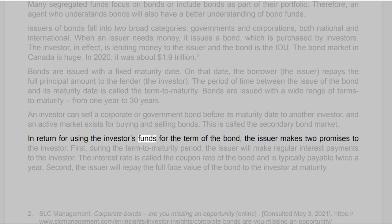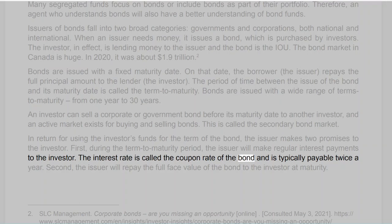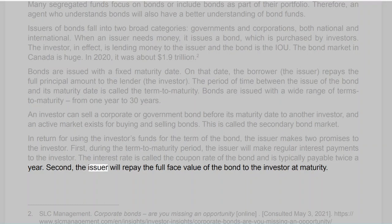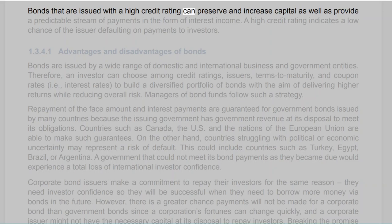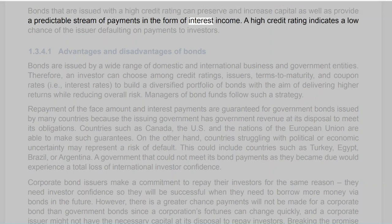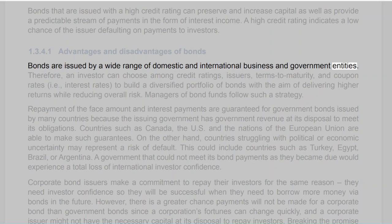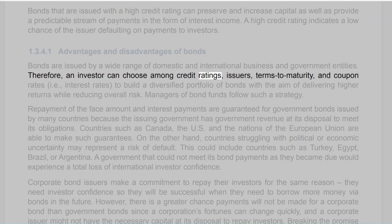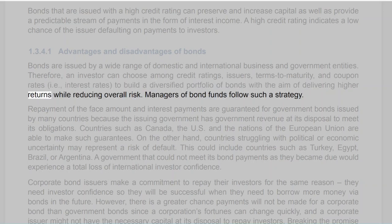Bonds issued with a high credit rating can preserve and increase capital as well as provide a predictable stream of interest income. A high credit rating indicates a low chance of the issuer defaulting on payments. Section 1.3.4.1: Advantages and Disadvantages of Bonds. An investor can choose among credit ratings, issuers, terms to maturity, and coupon rates to build a diversified portfolio of bonds aimed at delivering higher returns while reducing overall risk. Repayment of the face amount and interest payments are guaranteed for government bonds issued by many countries — such as Canada, the US, and nations of the European Union — because the issuing government has revenue at its disposal to meet its obligations.